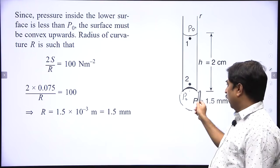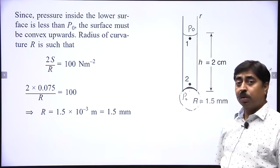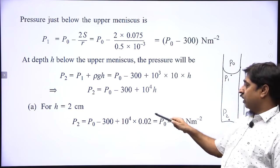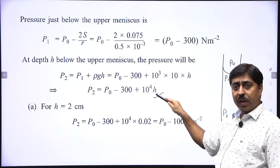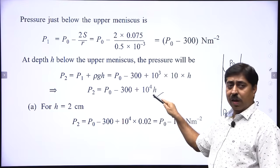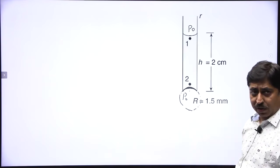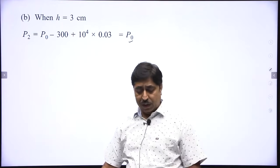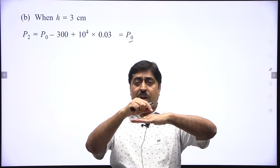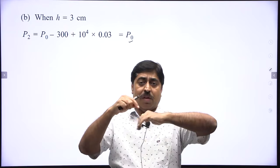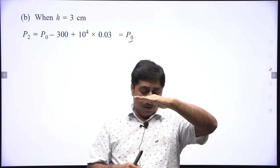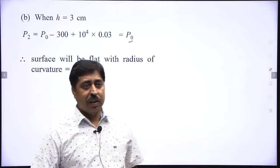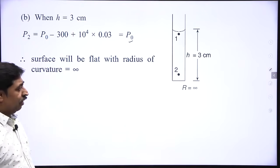The second part asks about h = 3 cm. Going back to our expression for p2 = P₀ minus 300 plus 10⁴ × h, substituting h = 0.03 m gives P₀ minus 300 plus 300 = P₀ exactly. So the pressure at point 2 is exactly atmospheric pressure, meaning pressure is the same on both sides of the lower surface. When pressure is equal on both sides of a flexible surface, the surface remains flat. Therefore, the radius of curvature of the lower surface is infinity.